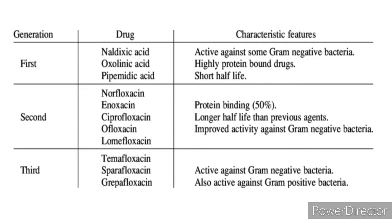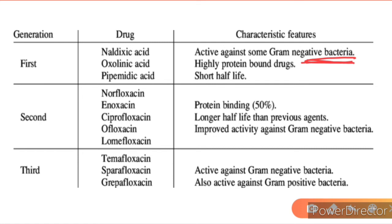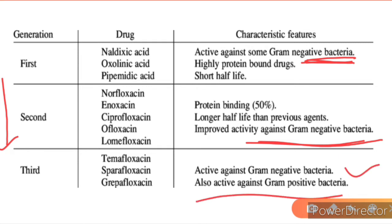Classification: fluoroquinolones are divided into three generations — first, second, and third. First generation drugs are active against gram-negative bacteria only. Pay attention to the spectrum of each generation: as we move from first to second to third, the spectrum increases. Second generation are active against gram-negative, and third generation are active against gram-negative and also gram-positive bacteria.